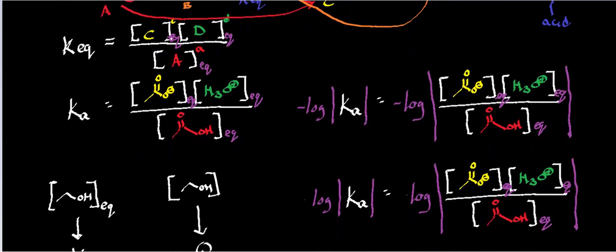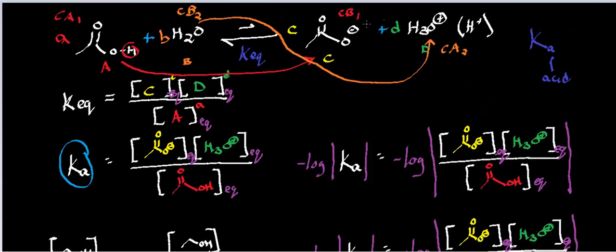Now, because this is an acid-base reaction, instead of calling this KEQ, I'm going to give it a special name, which is just KA. And KA just refers to any equilibrium constant for an acid-base reaction that is not one way. Something like HCl dissociation is considered one way. That doesn't have a good KA. So here, the species C is acetate, so I put that here at equilibrium. D is hydronium at equilibrium. And the A in the denominator is acetic acid.